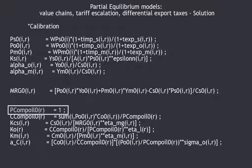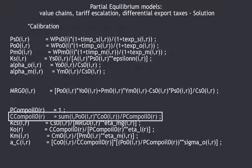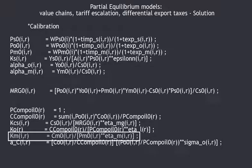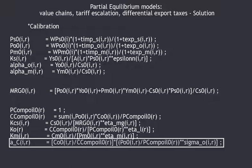The only difficulty in the calibration part is calibrating the composite price of oil and the composite consumptions of oil. I propose to give a value of 1 to the composite price of oil — effectively changing the unit of composite oil so that the new unit is the amount of composite oil you get for $1. The choice of unit is arbitrary, and I prefer to keep the units for the consumptions of each oil. Once you assign a value of 1 to the composite price, you can calibrate the composite consumptions of oil from the relations between composite consumption, composite price, the price of each oil, and the consumptions of each oil. Then you can calibrate the other size parameters KCS, KO and KM, as well as the share parameter A_C.